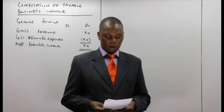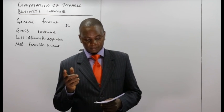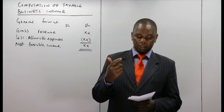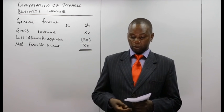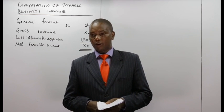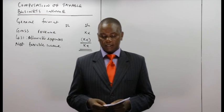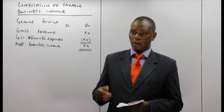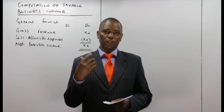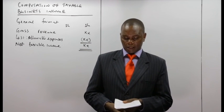Number eleven is expenditure incurred on scientific research, whether capital or revenue expenditure, which is also allowable so long as it relates to invention and innovations.